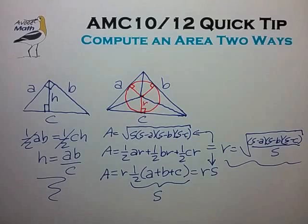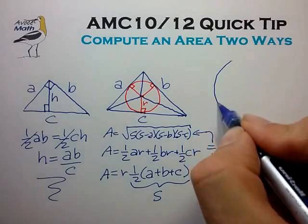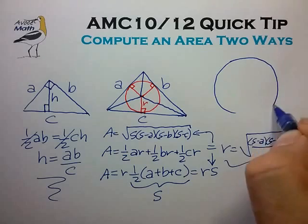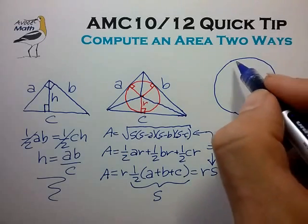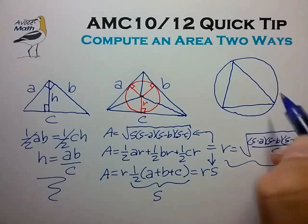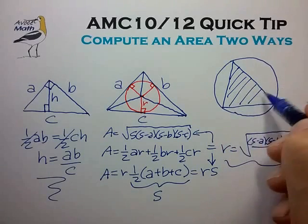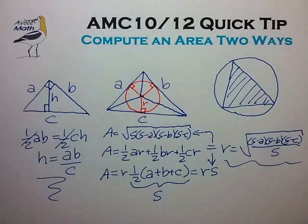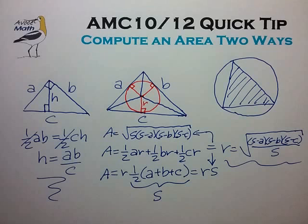In a third example, which I won't include in full in this video, you can use the exact same technique for finding the circumscribed circle of an arbitrary triangle by computing the area of the triangle in two ways — I'll provide a link to that video for those interested. In summary, this area technique is a simple and handy method, so look to use it in the AMC example problems in the description section of this video.